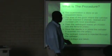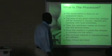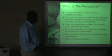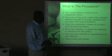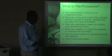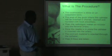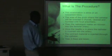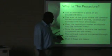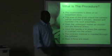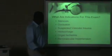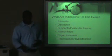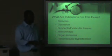Then the radiologist makes an insertion into the femoral artery. Once the needle is placed, the catheter is sited into the artery. The contrast material is injected through the catheter. Then an x-ray exposure could be taken. Okay, we could also do this by MRI or CT or they could also do it through fluoroscopy.